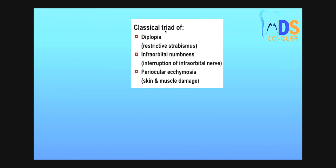The classical triad of blowout type of fracture is: diplopia, intraorbital numbness due to injury to the intraorbital nerve, and periocular ecchymosis. You have to remember this — the classical triad of blowout type of fracture is diplopia, intraorbital numbness, and periocular ecchymosis.